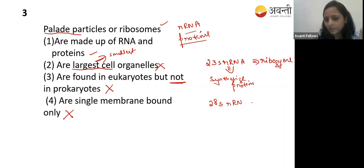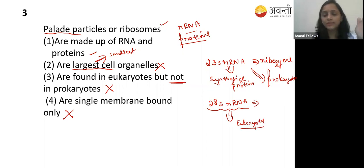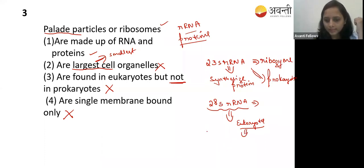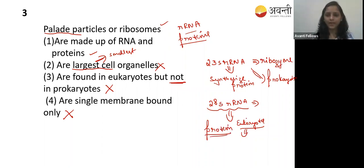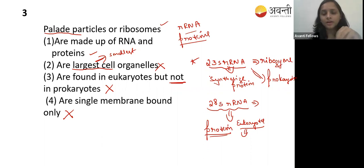The 23S rRNA is present in prokaryotes, while the 28S rRNA is present in eukaryotes, where it helps in synthesizing protein. Remember: if a question asks which rRNA helps in protein synthesis, in prokaryotes it is 23S rRNA, and in eukaryotes it is 28S rRNA.